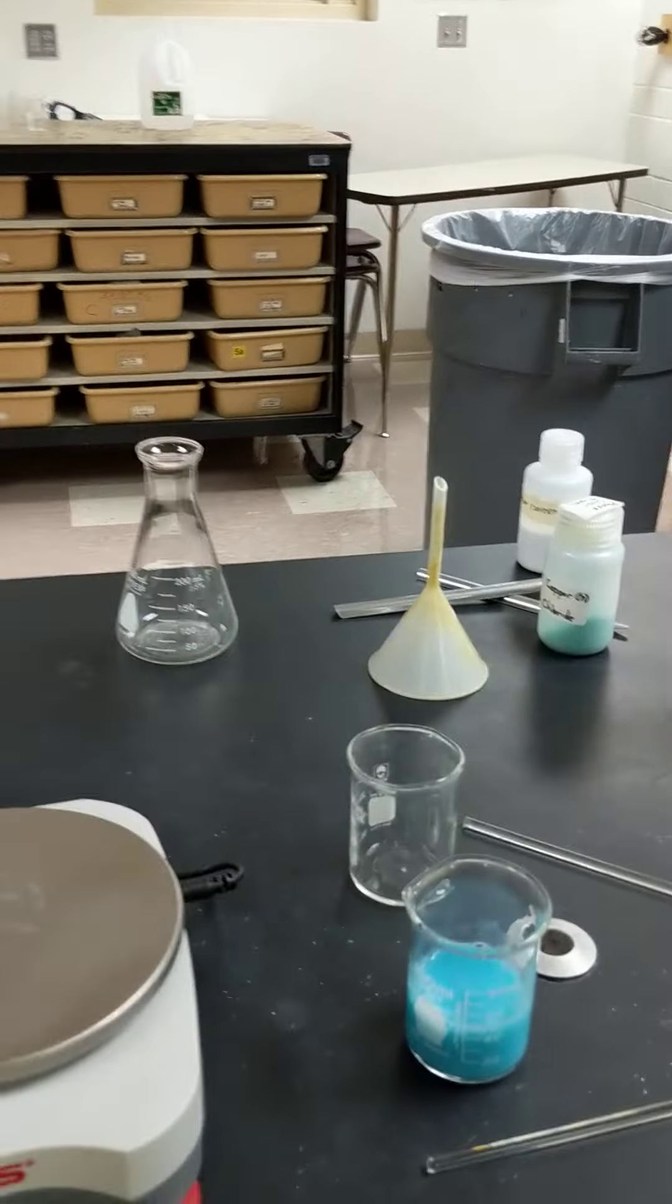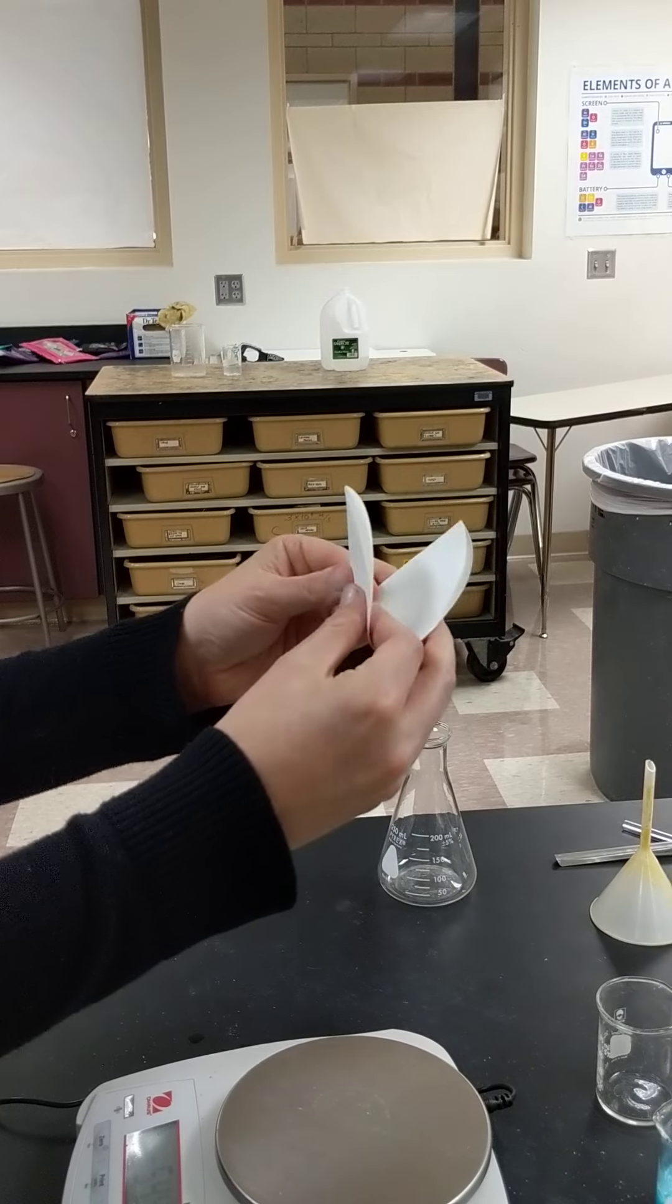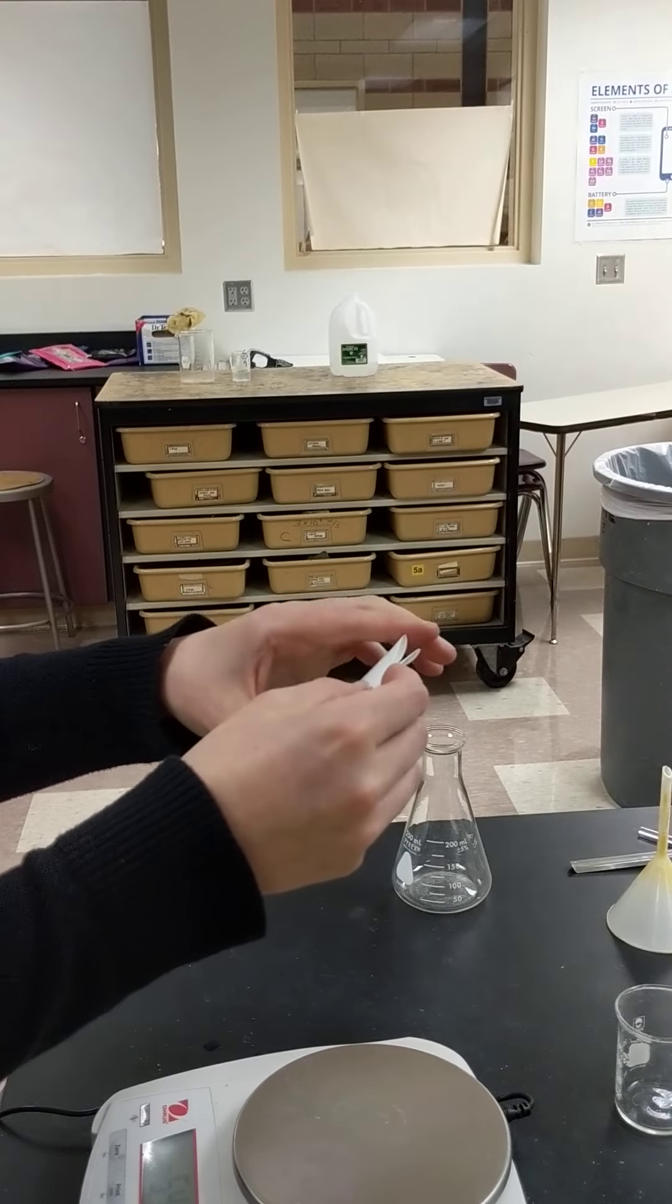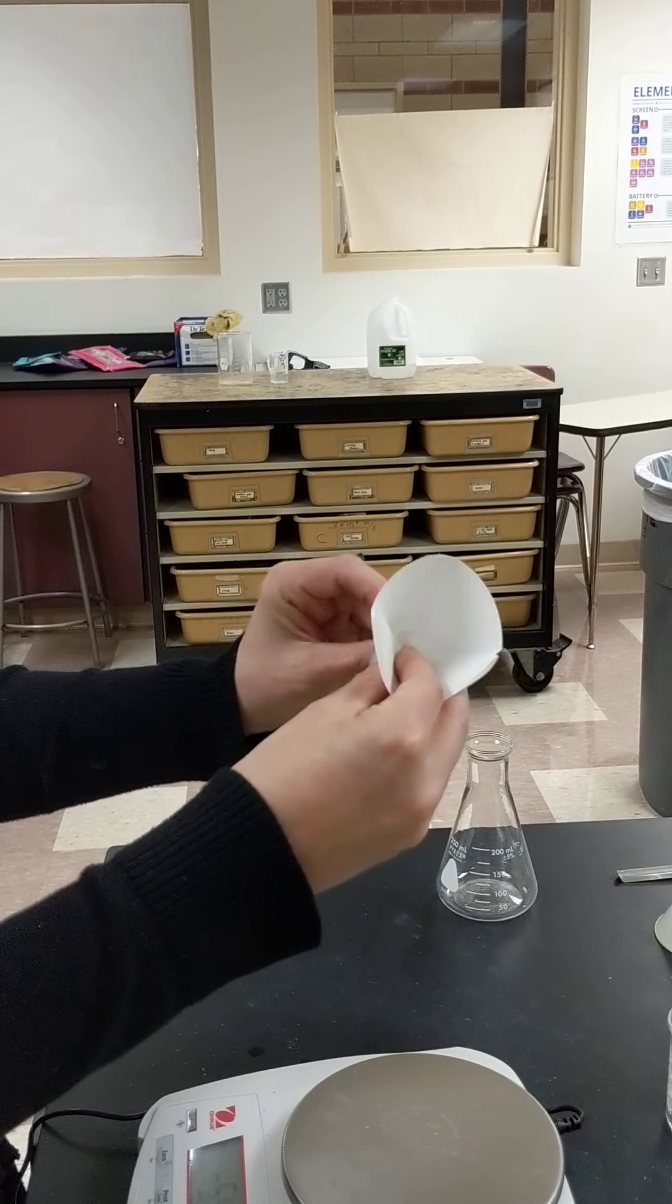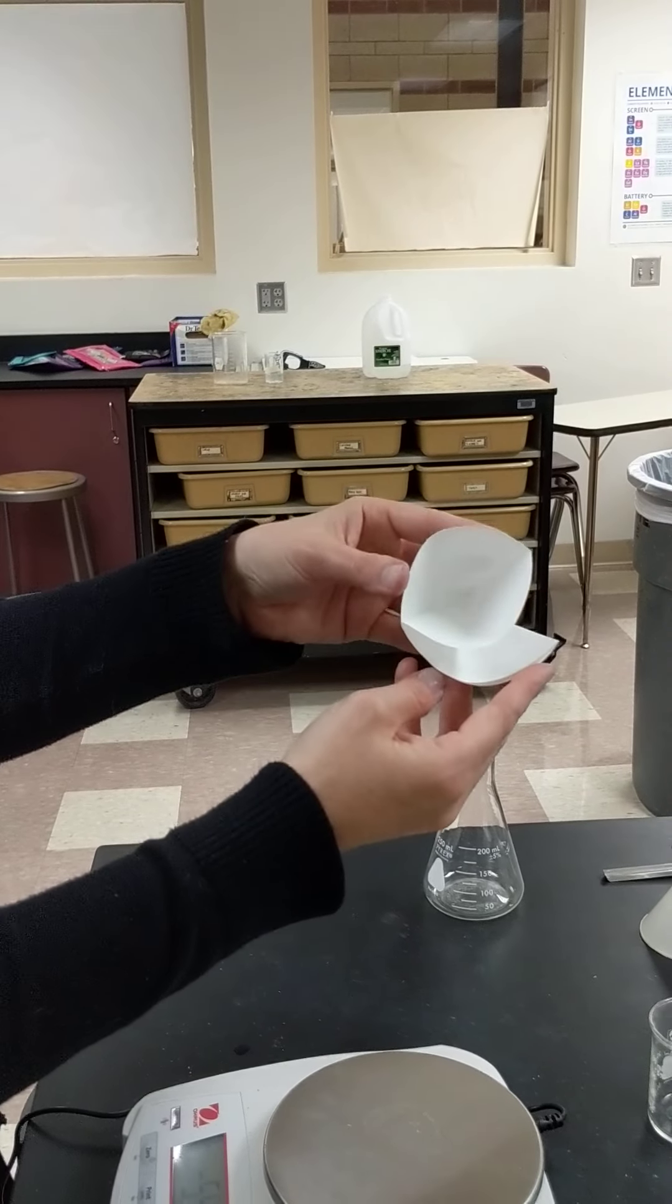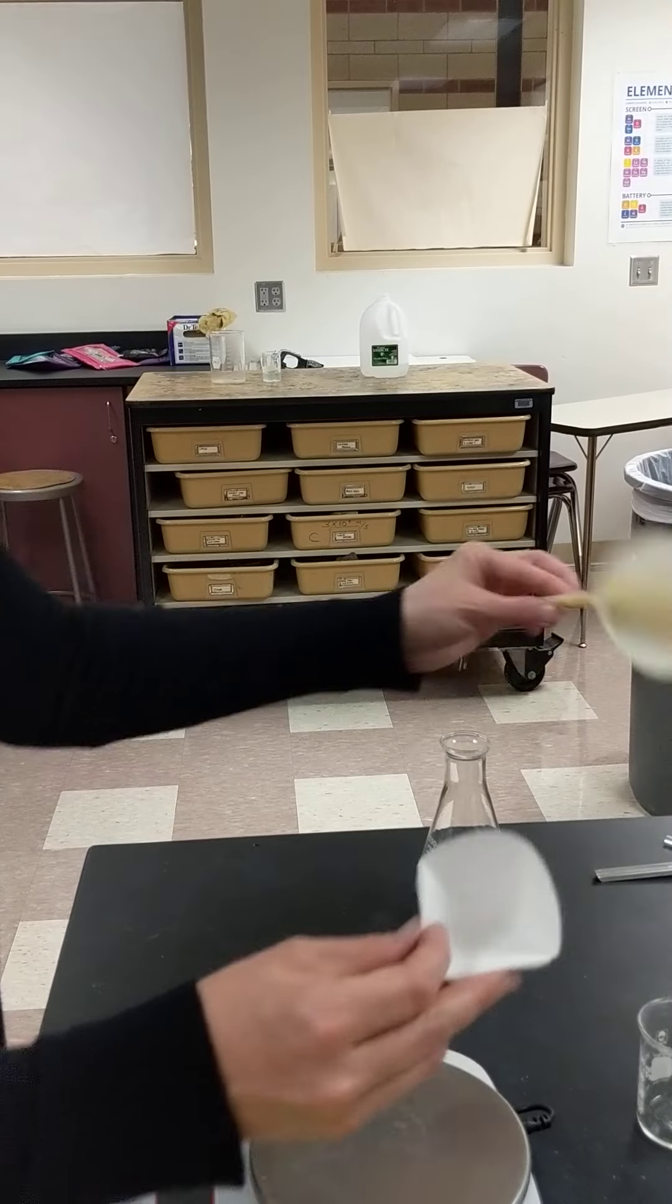So we're going to take filter paper and we're going to fold it in half. And we're going to fold it in half again. And this makes a little cone like so that we can fit into a funnel.